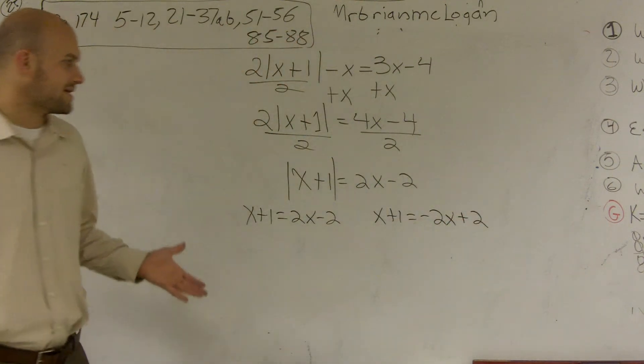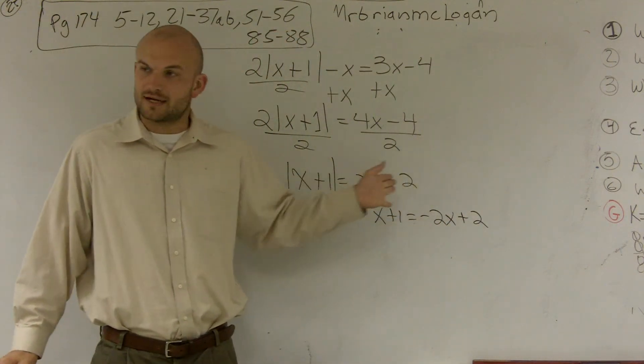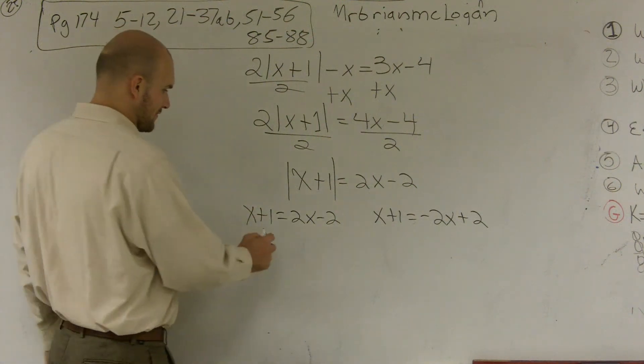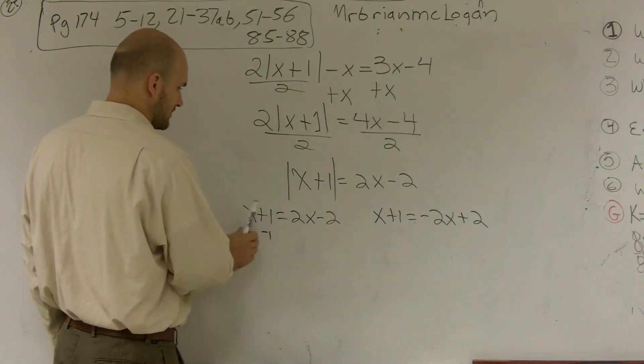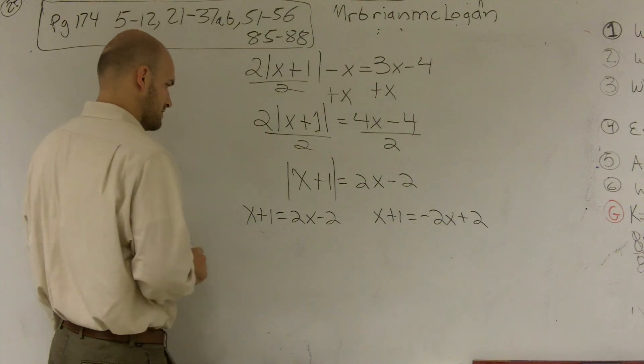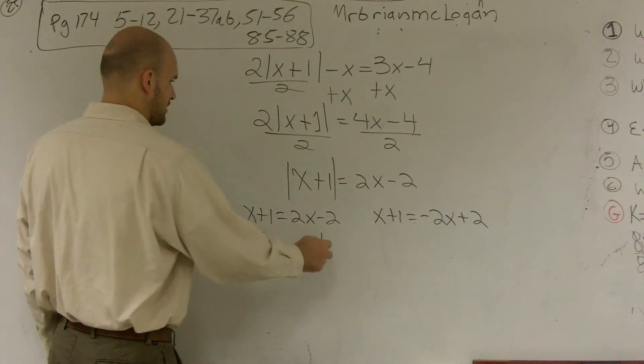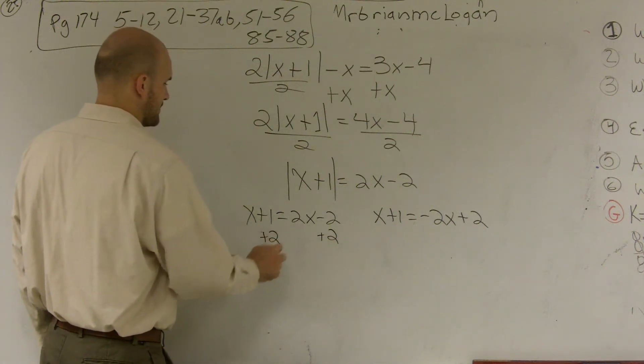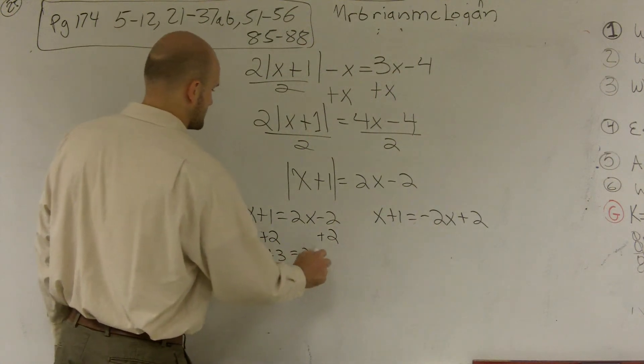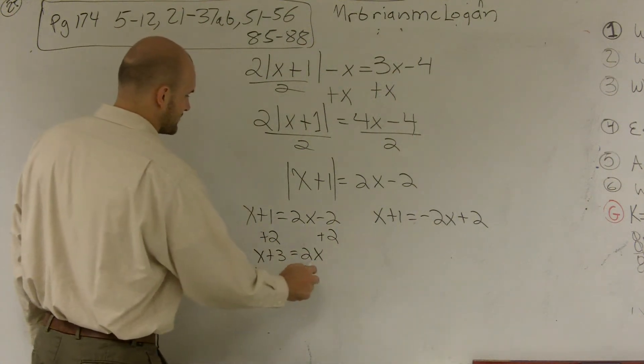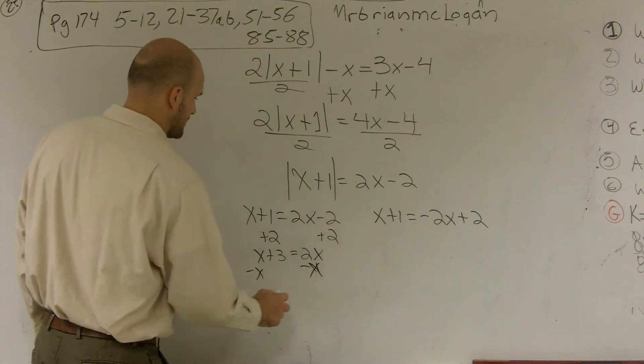So what I'm going to do is I'm actually taking the opposite of my other side. So now, when I go ahead and solve for x, let's get the x by itself. So I'll add a 2 over here, get x plus 3 equals 2x minus x over here. And therefore, I get 3 equals x.